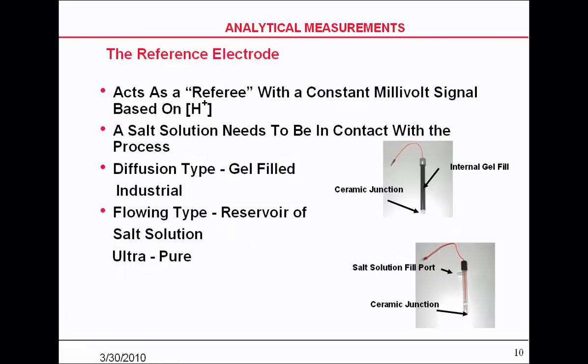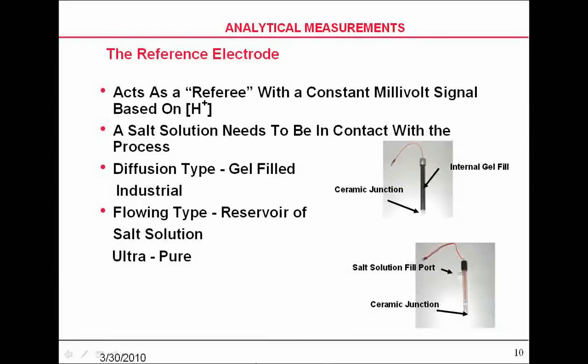There are basically two types of references. One is the top picture, and the other is the bottom. The one on the top is a small industrial reference electrode. In these cases, they have a finite amount of potassium chloride in them. They're filled when they're shipped from the plant with potassium chloride or a reference solution. The reference electrode acts as a referee, attempting to supply a constant millivolt signal back to your electronics.